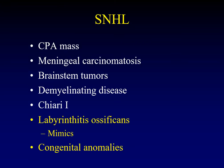Let's begin our discussion with sensorineural hearing loss. Probably the most common cause is presbycusis, which is degradation of hearing with age. The most common thing we identify as a source of hearing loss is a cerebellopontine angle mass, and of those, vestibular schwannomas are the most common. We've already covered that topic.